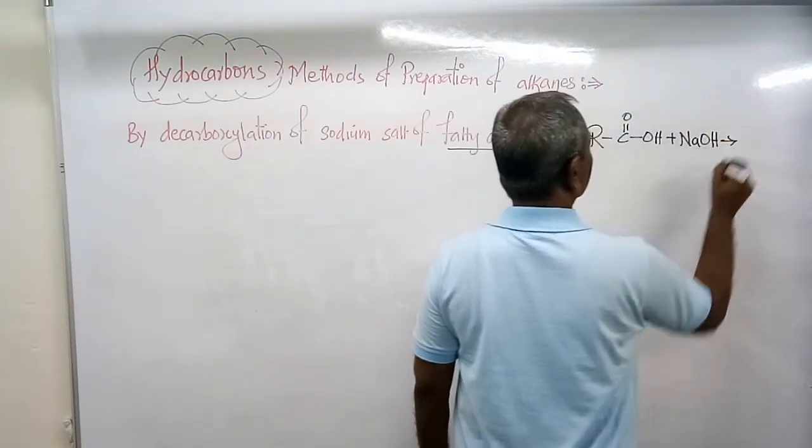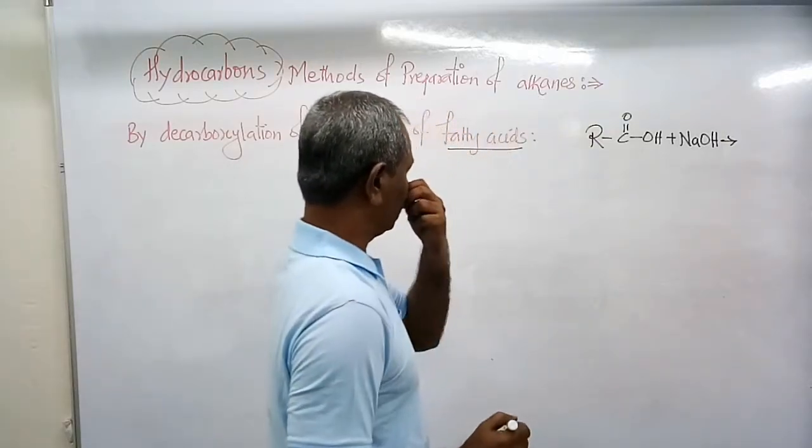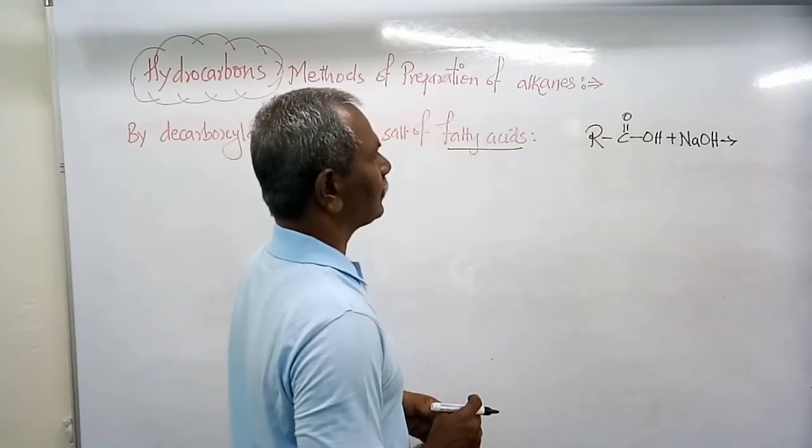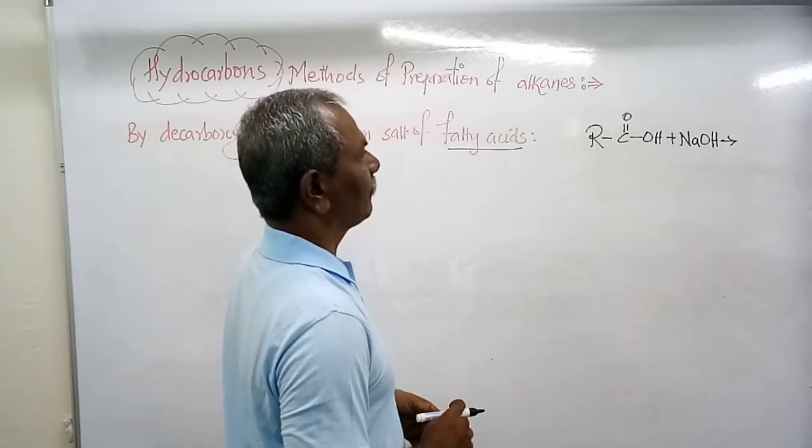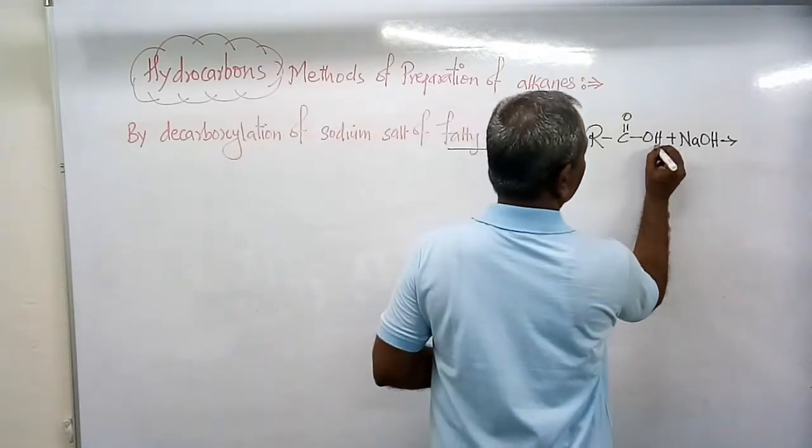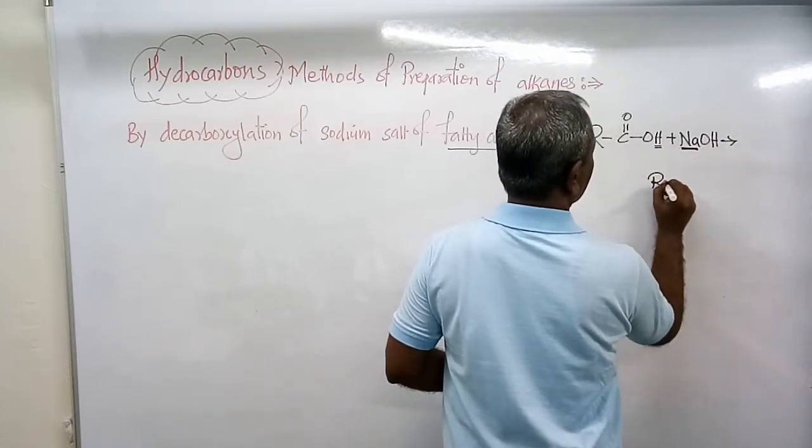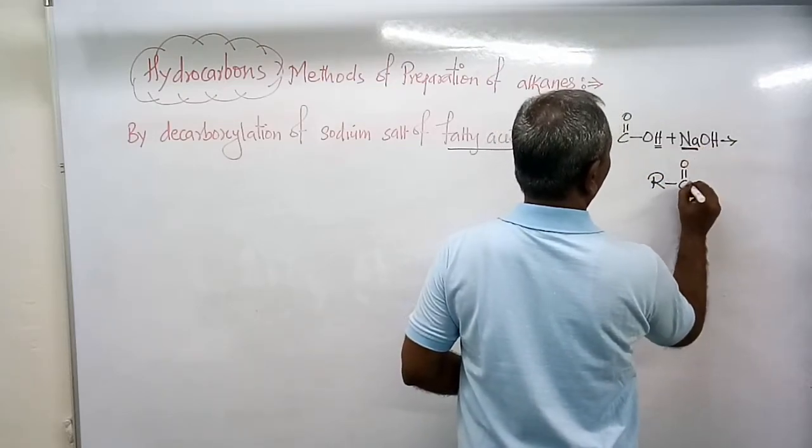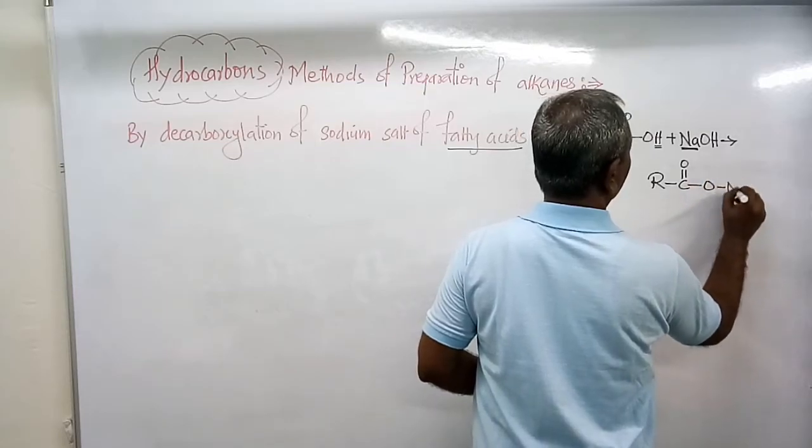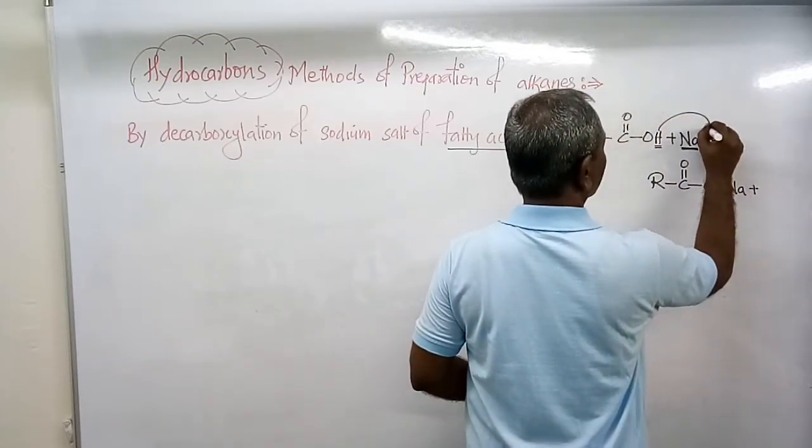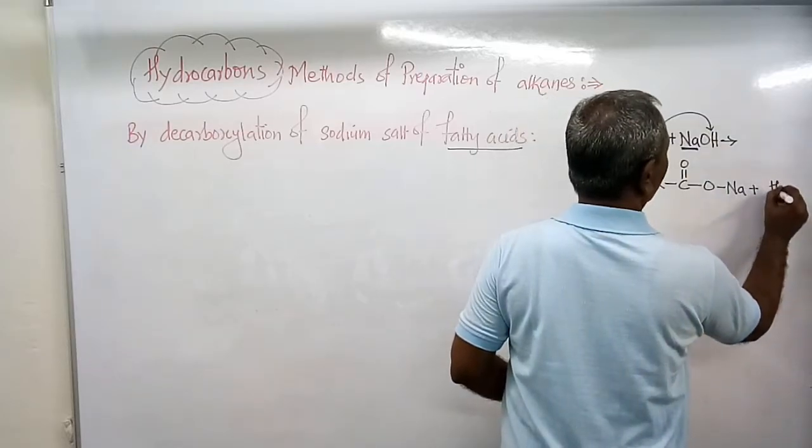In the presence of alkali, the H is replaced by Na to form R-C double bond O-Na+, and this H combines with OH to form water.